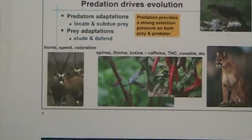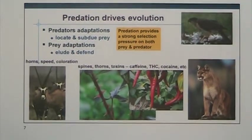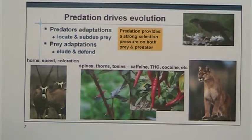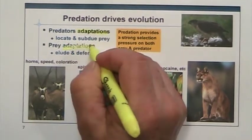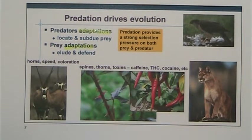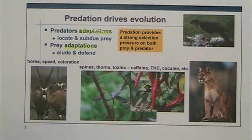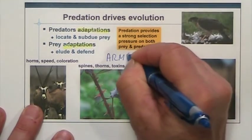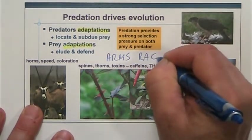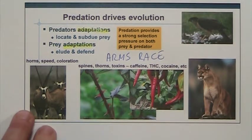So keep in mind all those interactions and you need to remember them and the signs — figure out a way to remember it. In the context of evolution, predation actually drives evolution. That's an important concept to remember, because the predator and the prey are constantly being selected for — for better ways to escape, or better ways to catch the prey. So it's what we call an arms race between predator and prey.